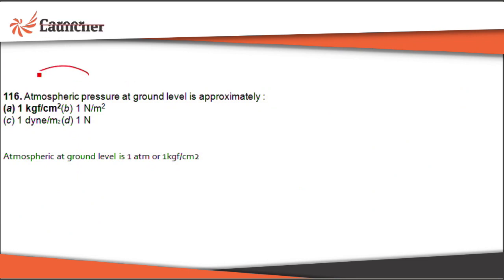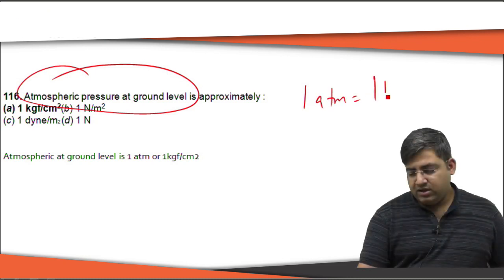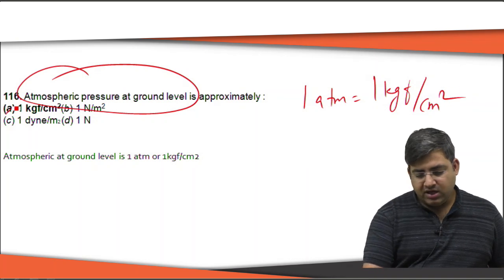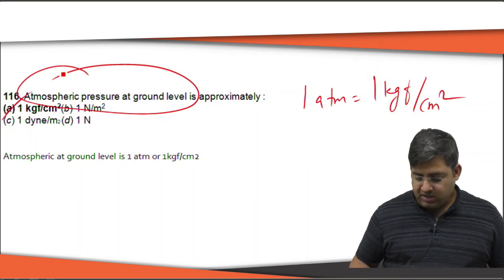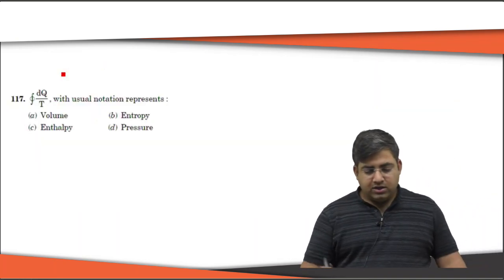What is the atmospheric pressure at ground level? Atmospheric pressure is 1 atm, which equals 1 kgf/cm². The right answer is A.